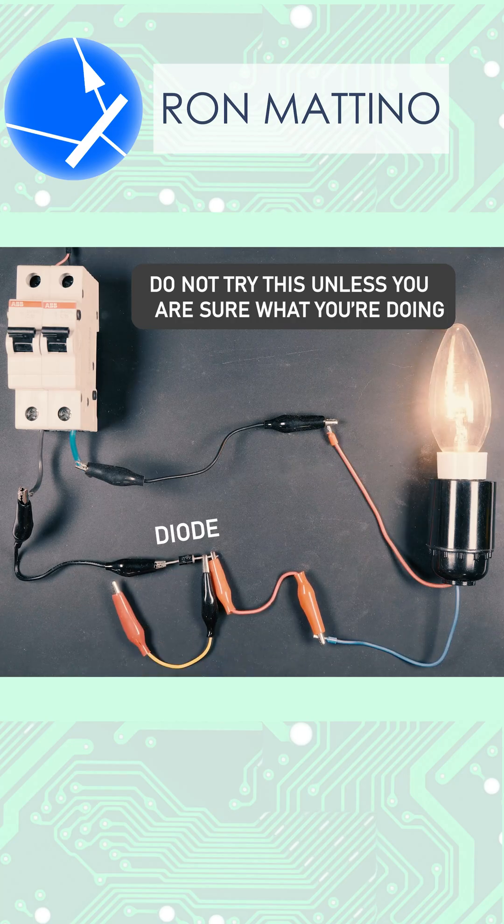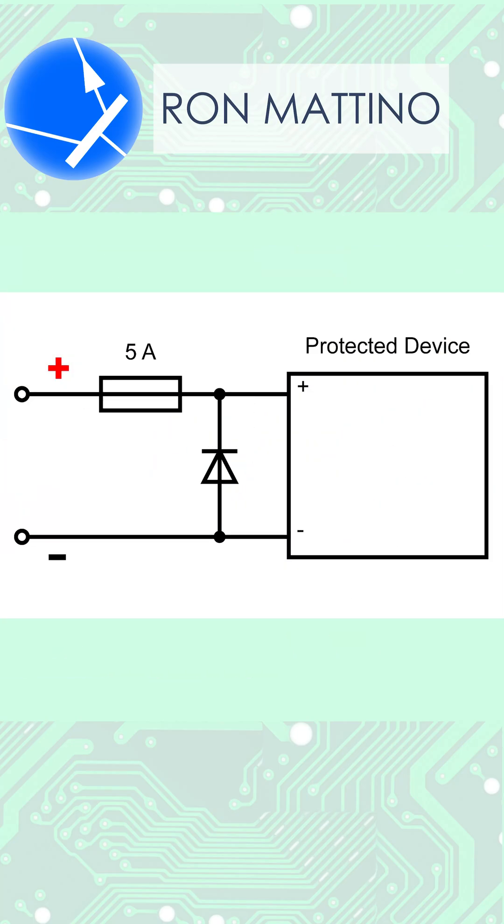Using a diode and a fuse, you can protect any DC-powered circuit from wrong polarity. In case of reversal, current will flow like this and the fuse will be blown protecting the device.